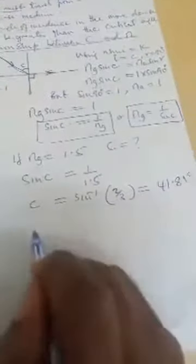By taking sine c as 1 out of 1.5, and therefore our critical angle will be the arc sine of 2 out of 3, which will give you approximately 41.81 degrees, which we normally round off close to 42.